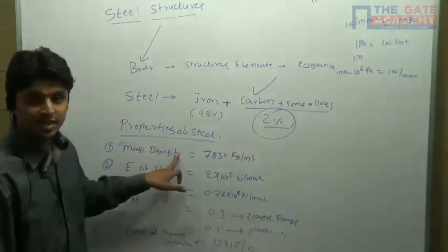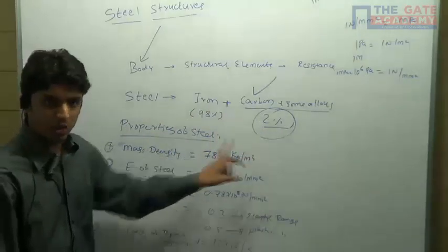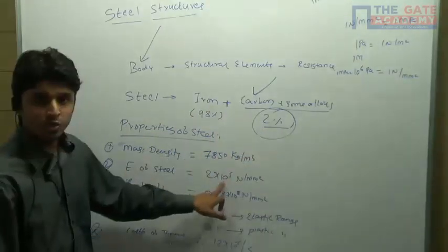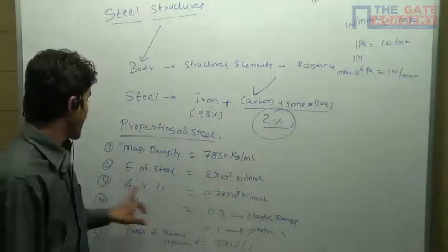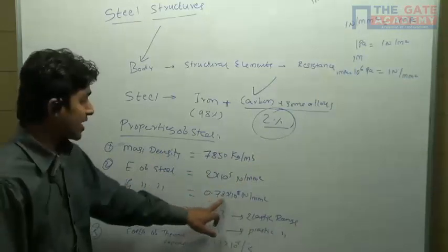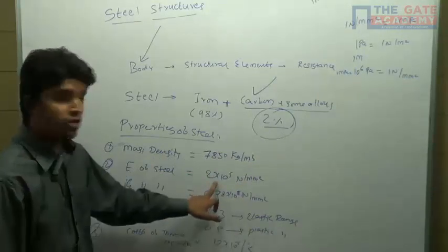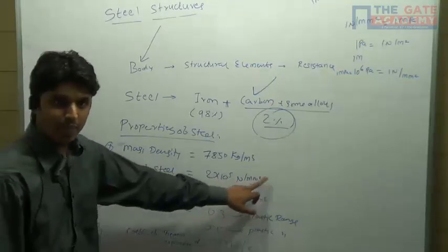These are some of the properties of the steel: mass density is 7850 kg per meter cube; Young's modulus of steel is 2 into 10 raised to 5 Newton per mm square; modulus of rigidity is 0.785 into 10 raised to 5 Newton per mm square, or you can also say it as 2 into 10 raised to 5 mega pascal.